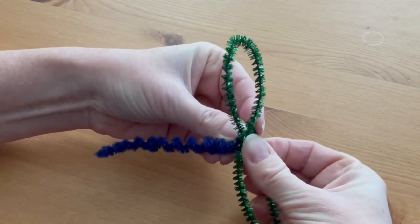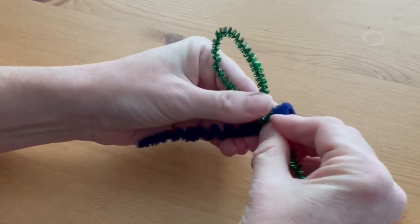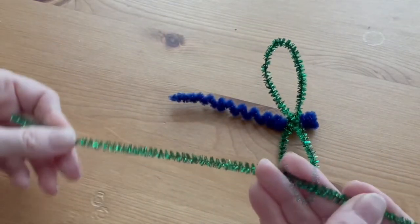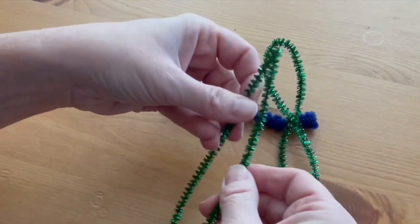Then twist it around to keep those wings in place. Make another set of wings with the second green pipe cleaner.